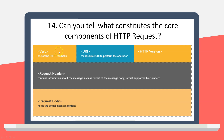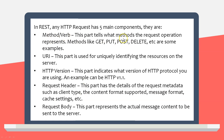Every single HTTP request has five components: method/verb (GET, PUT, POST, DELETE), URI (uniquely identifying resources on the server), HTTP version (e.g., 1.1), request header (client type, content format like JSON or XML, cache settings), and request body (the actual message content to be sent to the server).